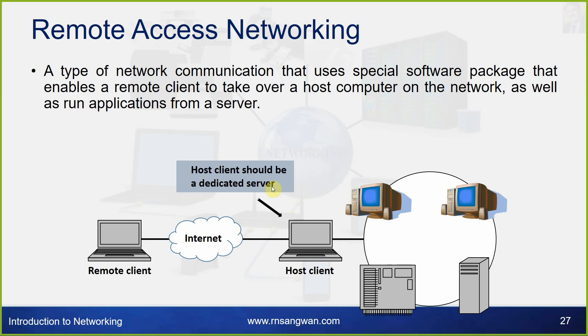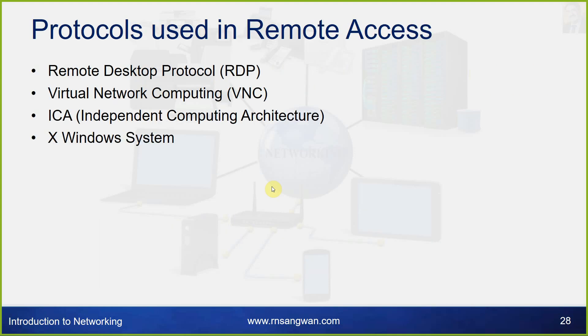Remote access networking is a type of network communication that uses a special software package enabling a remote client to take over a host computer on the network and run applications from the server. Protocols used in remote access include RDP (Remote Desktop Protocol), VNC (Virtual Network Computing), ICA (Independent Computing Architecture), and the X Windows System for Linux.